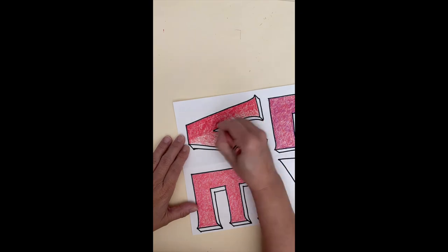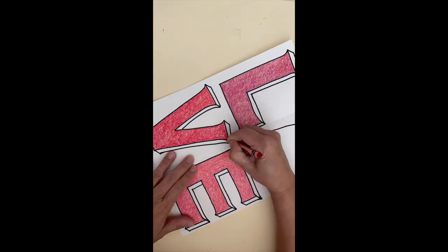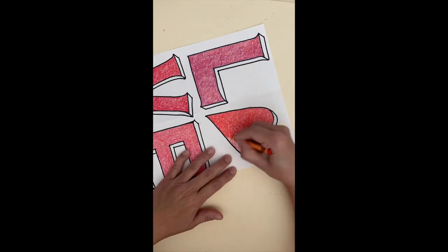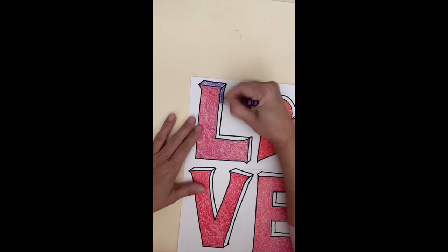I'm using my two crayon coloring technique. I'm coloring all of my letters red and then I'm using the second color on top. You'll see how each letter changes.